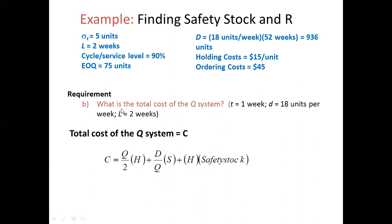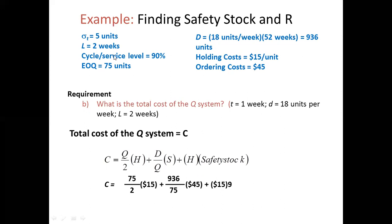The next requirement is the total cost of the continuous review (EOQ) system. The formula is: C = (Q/2) × H + (D/Q) × S + holding cost × safety stock. The unit cost is $75, the holding cost is $15 per unit, and the total demand D uses 52 weeks per year.